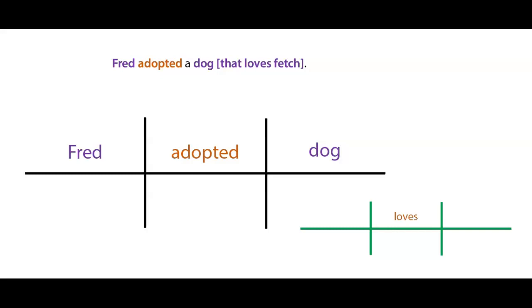It is loves. And what is the subject of that verb? It is that. And what is the direct object of that verb? It is fetch. That loves fetch. So the thing that was loved is fetch. The thing doing the loving is this representative word for dog. And that word is that.